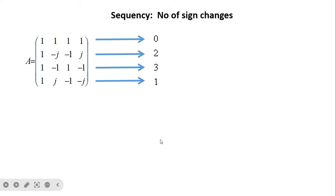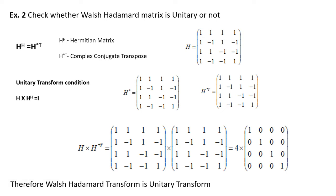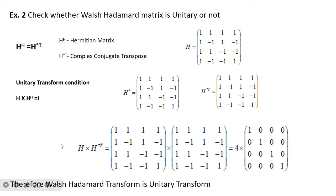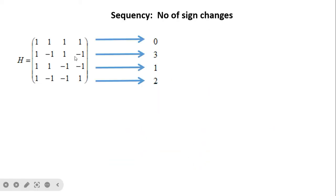Next, check whether the Walsh-Hadamard matrix is unitary. For a 4×4 Walsh-Hadamard matrix, since no complex numbers are present, we skip the complex conjugate step and directly take the transpose. Multiplying the matrix by its transpose gives the identity matrix, though not normalized. Multiplying by 1/√4 gives I. Therefore, the Walsh-Hadamard transform is also a unitary transform.